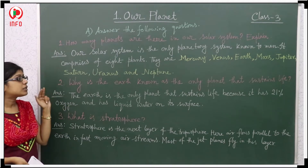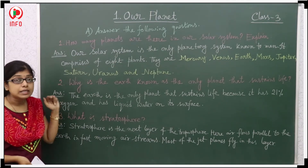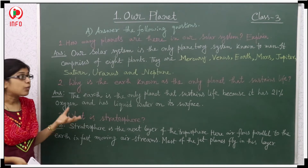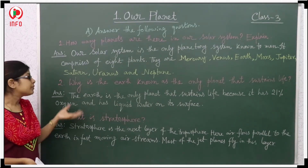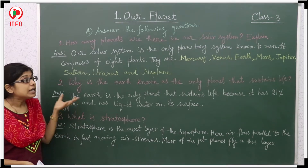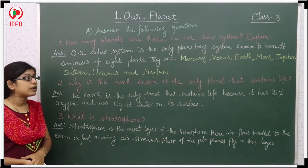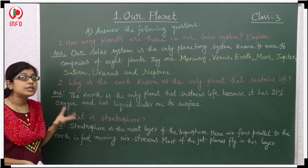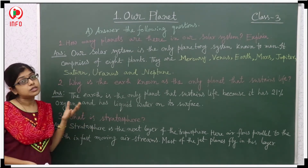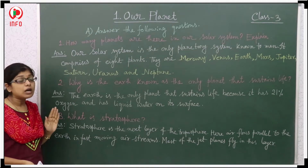Next question: Why is Earth known as the only planet that sustains life? Among these 8 planets, life can only exist on Earth. The reason is that Earth has 21% oxygen in its atmosphere and liquid water on its surface. That is the main reason life can exist on Earth.